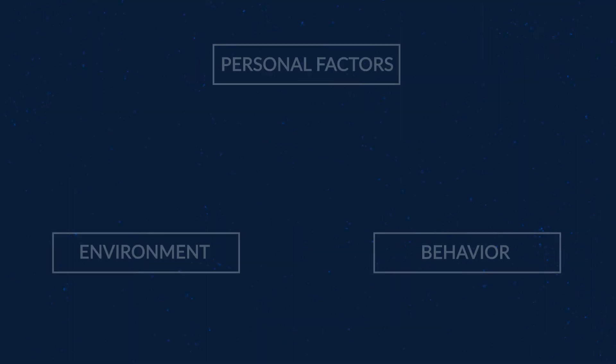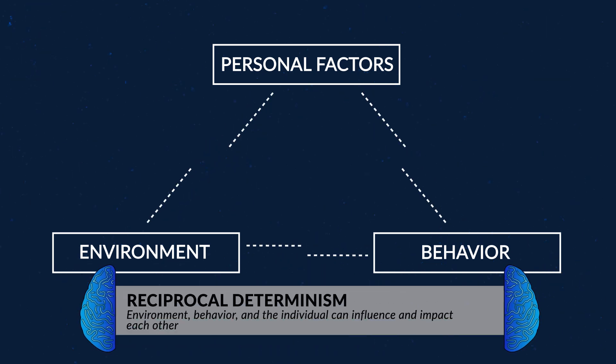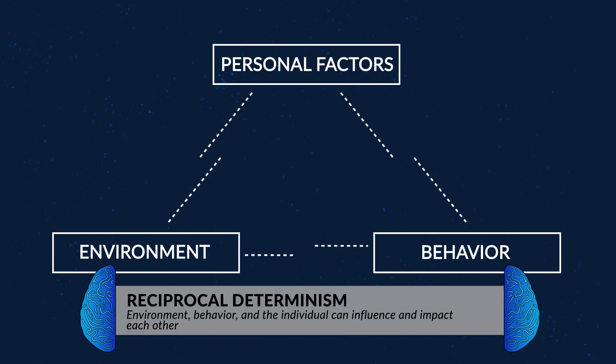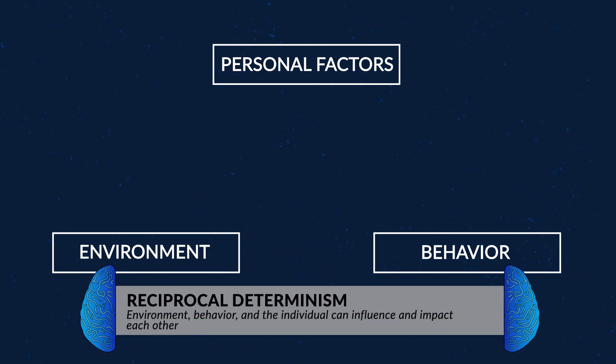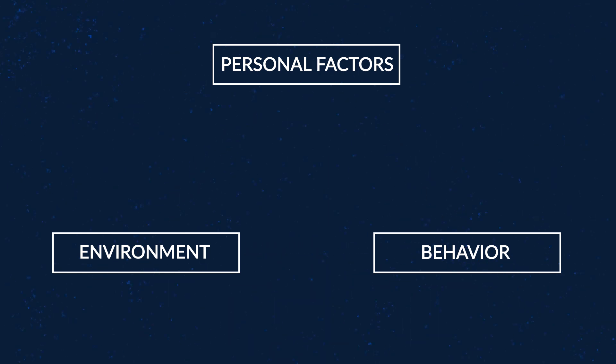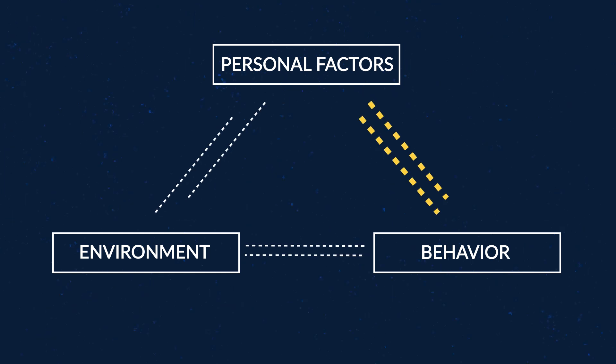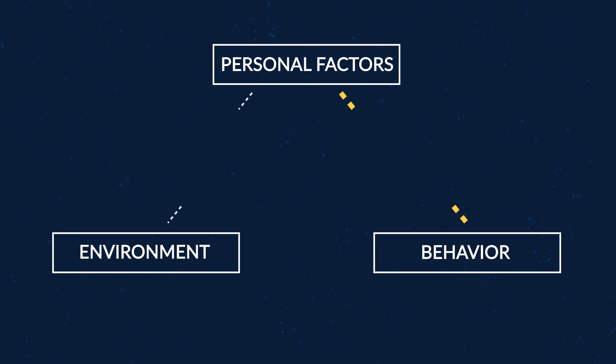Later in Unit 7, we'll learn about Reciprocal Determinism, which connects back to this conversation. Reciprocal Determinism proposes another way to think about the environment. Instead of thinking of it as a one-way street where the environment impacts a person, Reciprocal Determinism believes that the environment, behavior, and an individual's feelings and beliefs can actually influence and impact each other. Personal factors influence behaviors and behaviors impact personal factors.